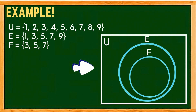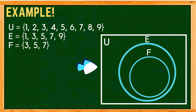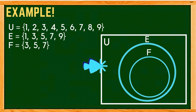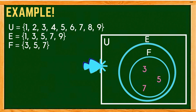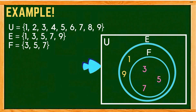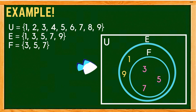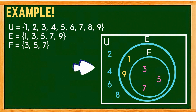This will be the appearance of our Venn diagram. Since all elements of set F are also elements of set E, the circle of set F is placed inside the circle of set E. First, we place the elements of set F: 3, 5, and 7. Next, we write the other elements of set E that are not in set F: 1 and 9. Then we write the elements in the universal set but not in set E or set F — which are 2, 4, 6, and 8 — outside the two circles.